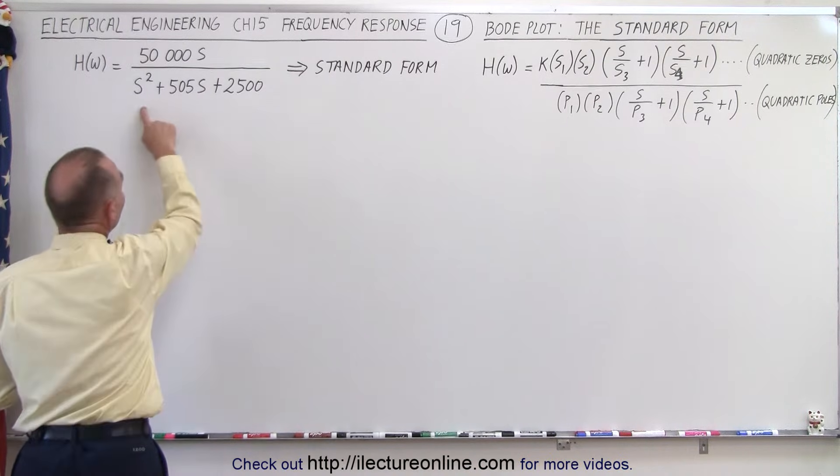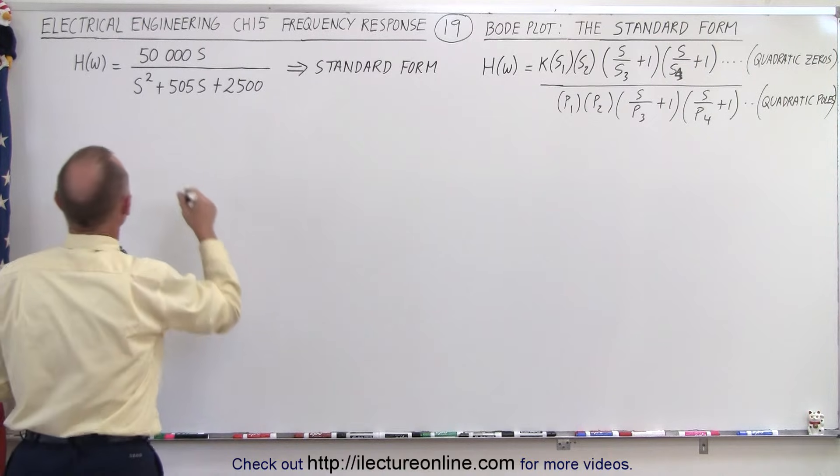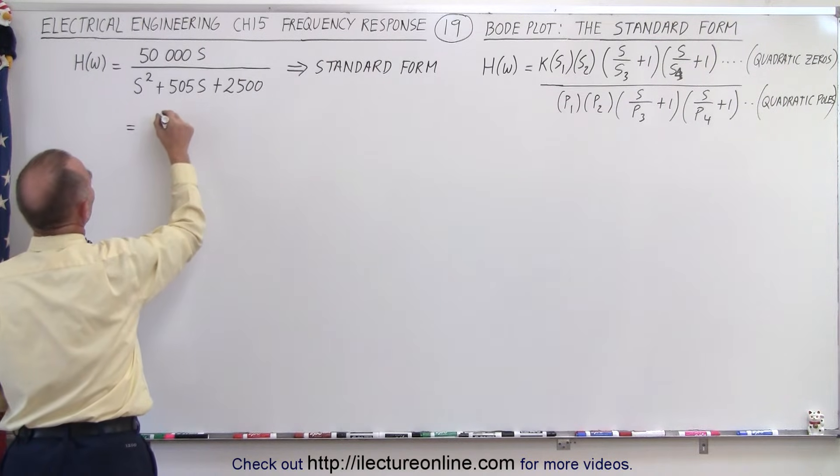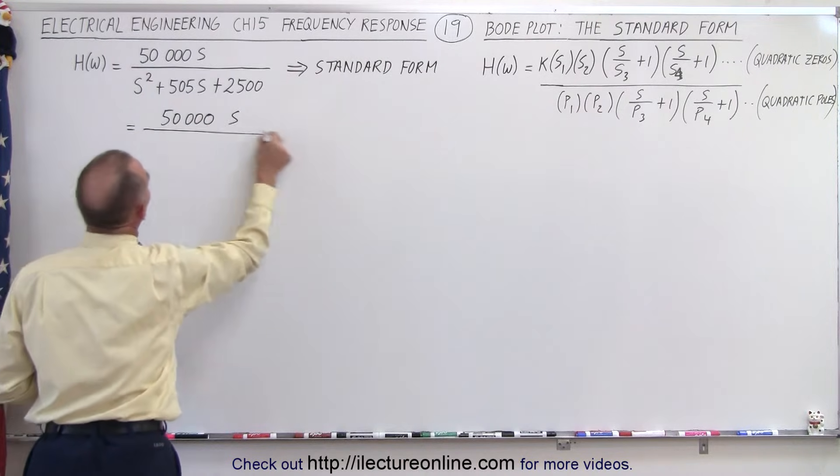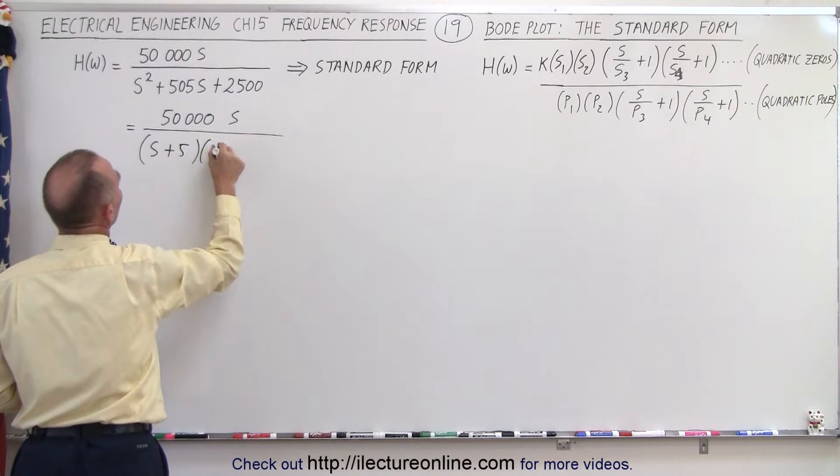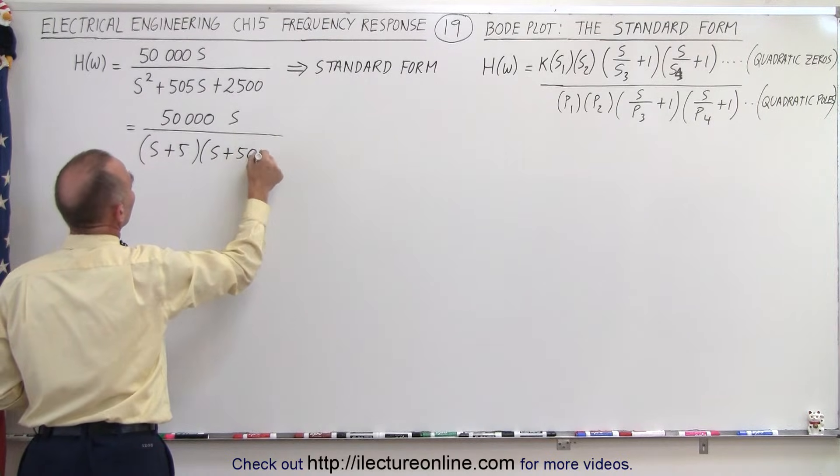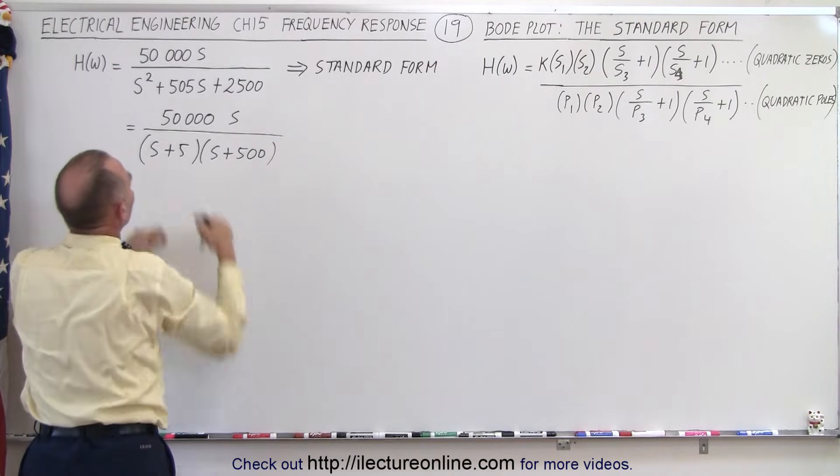Before we can do that, we're going to factor the denominator. Of course we picked numbers just right so it's easy to factor. So we can say that this is equal to 50,000 s in the numerator divided by s plus 5 times s plus 500. Notice when we multiply these we get 2500, when we add them we get 505.